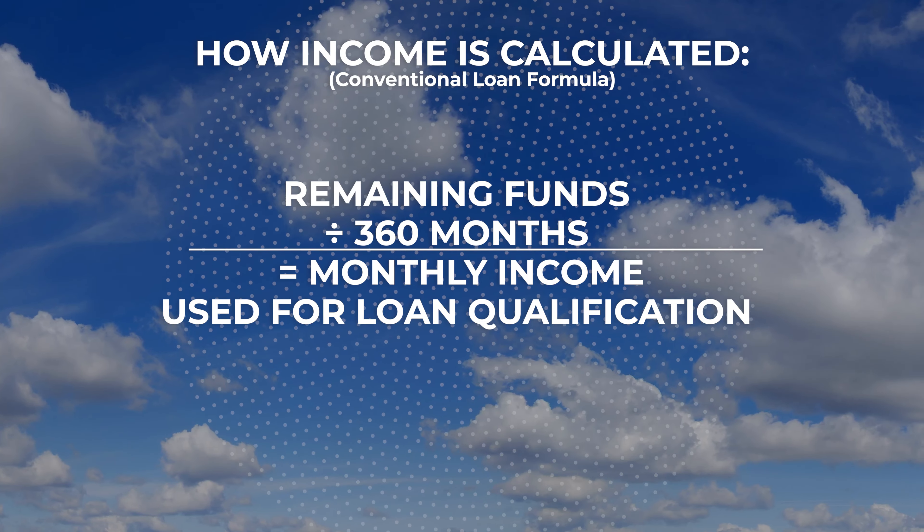Under all of these scenarios, we're going to use the same baseline: a purchase of an owner-occupied single-family home here in Florida. The amount of net liquid assets after the down payment, settlement charges, and reserves have been removed is going to be $750,000. On a conventional loan, we're going to take that $750,000 divided by 360 months, and we come up with $2,083 — and you can do that up to $548,250. That's not enough income on its own to qualify for a loan of that size.